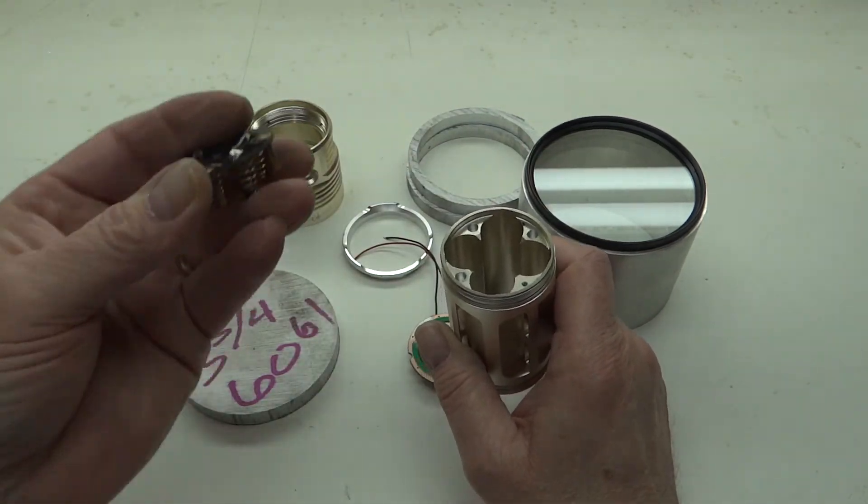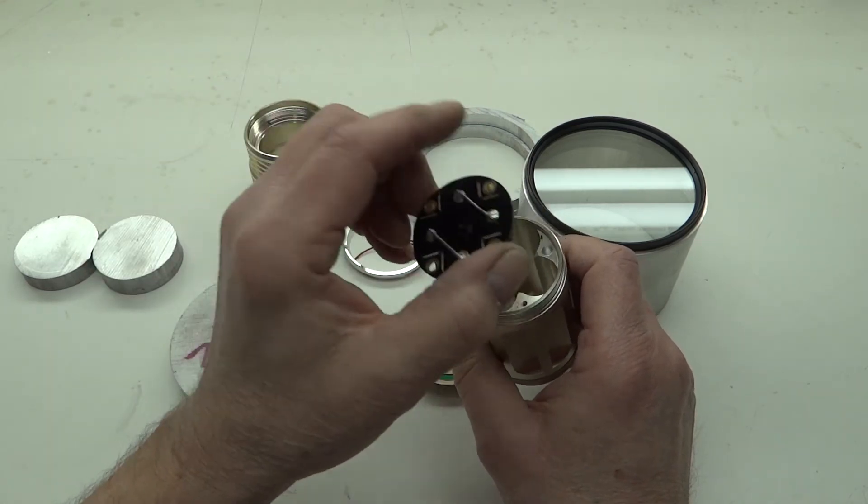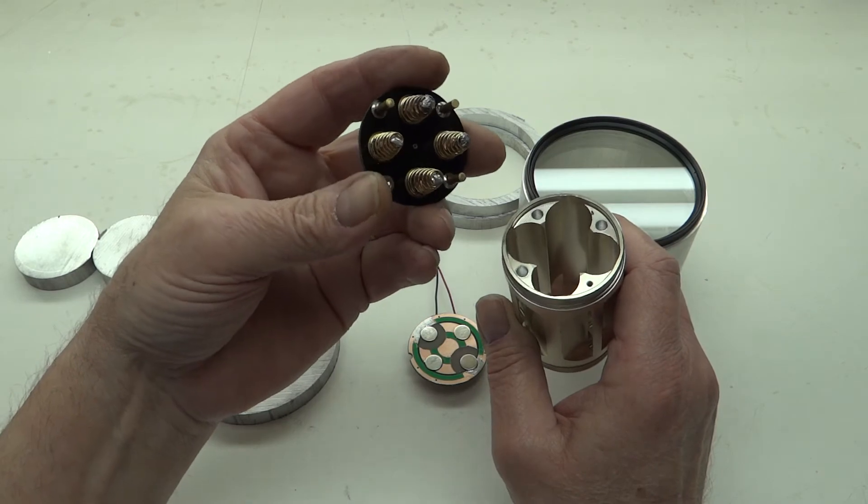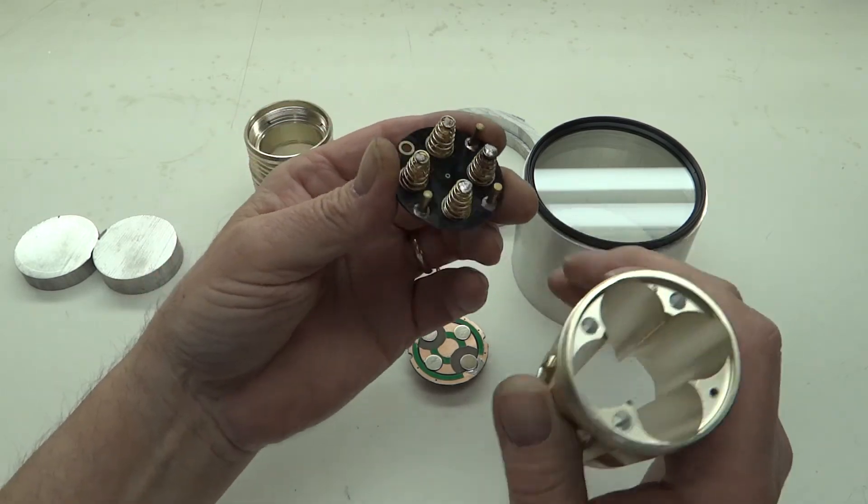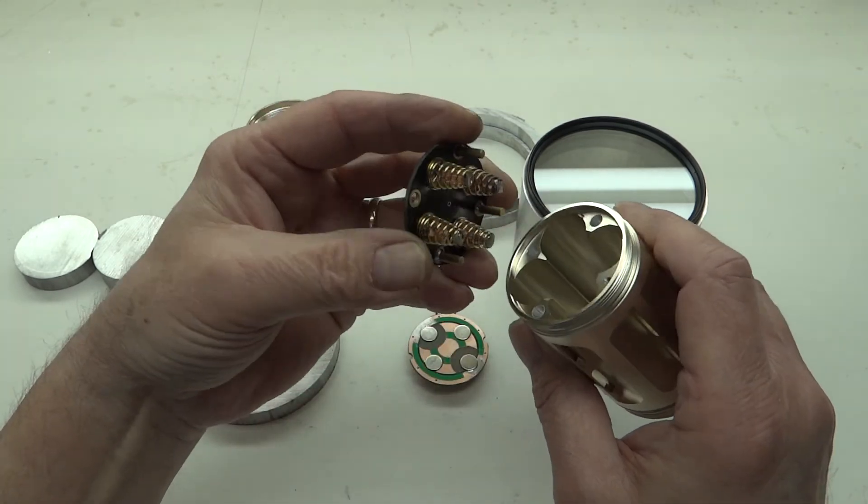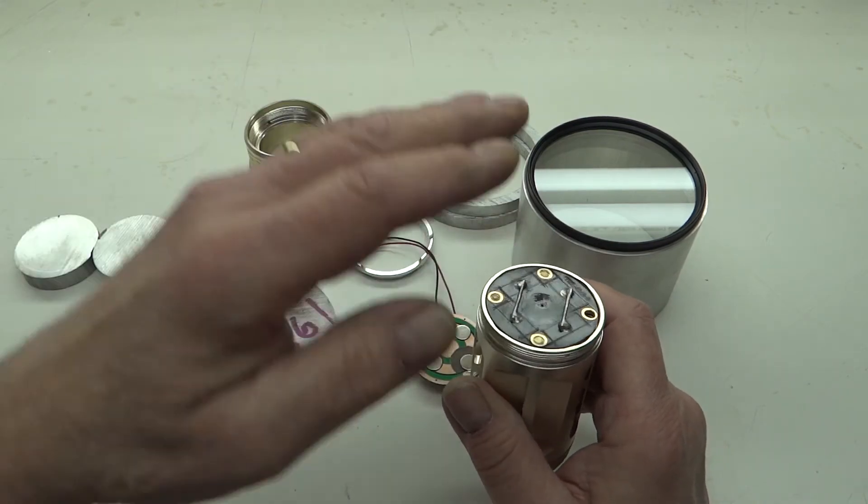Now what I did in order to align it so it can't be put on wrong is I used metal pins here and enlarged the holes in the body so that it has to go in one way. So now it'll be pushed in and then I'll just take the tail cap and screw it down.